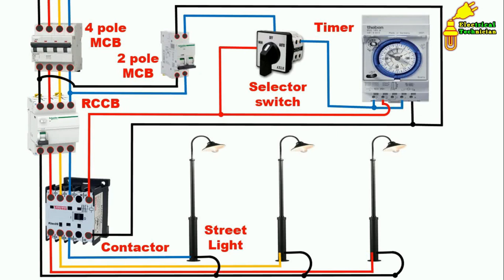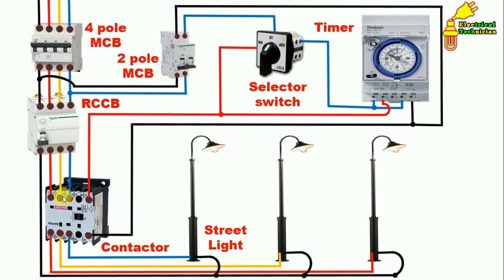Power wiring and control wiring are now completed. To turn on the street lights, first turn on the four-pole MCB and the RCCB so power supply reaches the contactor. We have two options: select manual position on the selector switch, and power supply goes directly to turn on the contactor; or select auto position, and when the timer operates as per the time set, the NO contact changes to NC, power supply flows to the contactor, the contactor turns on, power terminals get connected, and the street lights turn on.